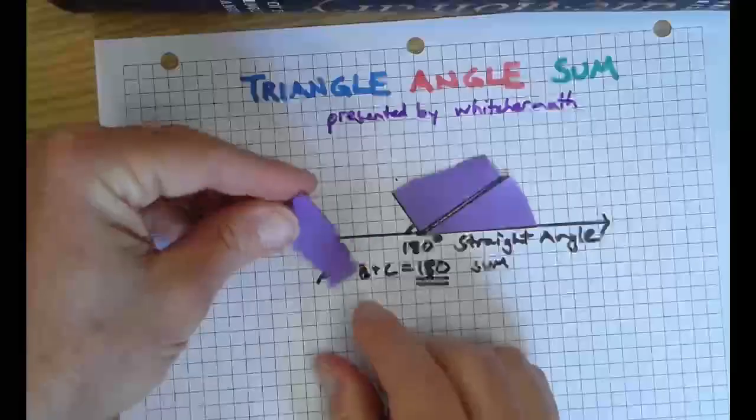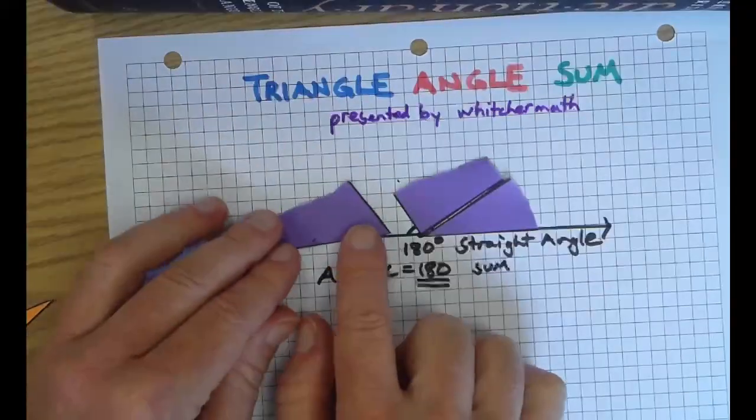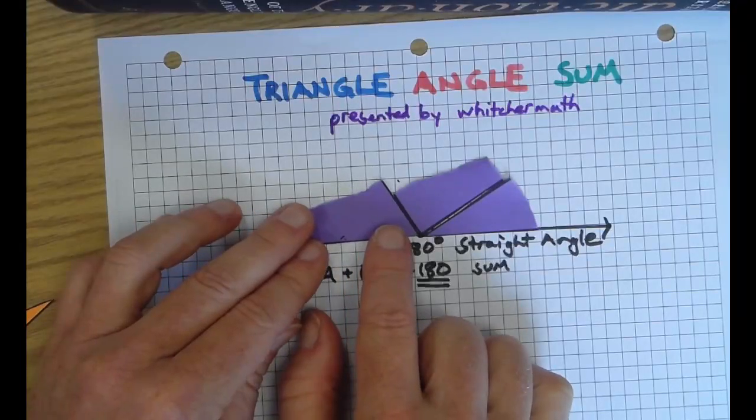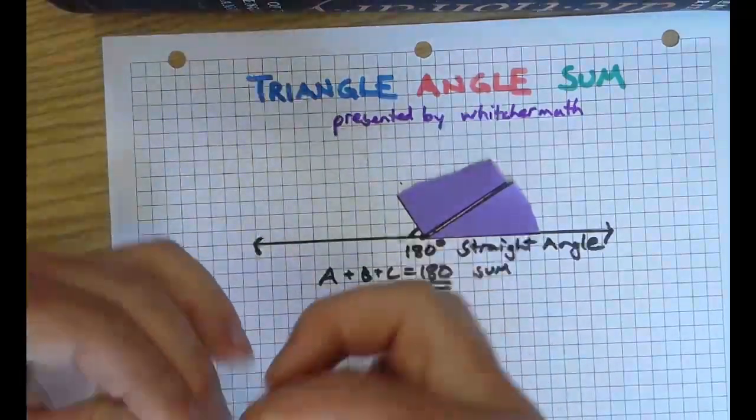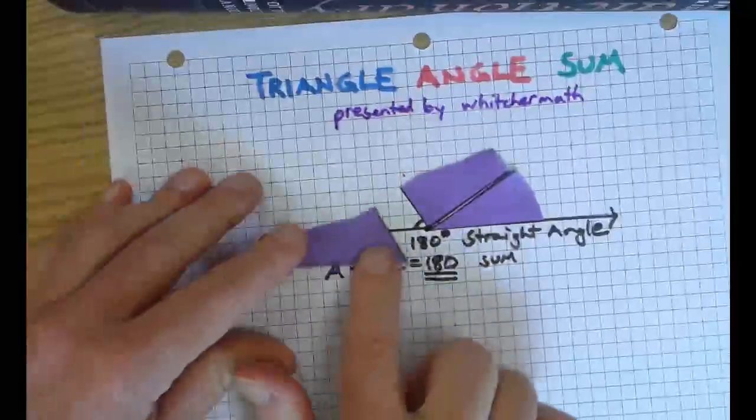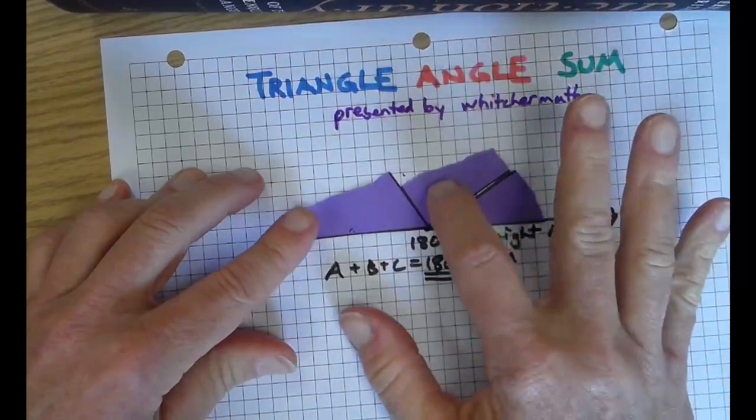It doesn't matter which order you put them in. Line up those sides. Make sure each corner of the triangle is a vertex of the straight angle. This one got a little bendy on me. Boom. So we did it three times.